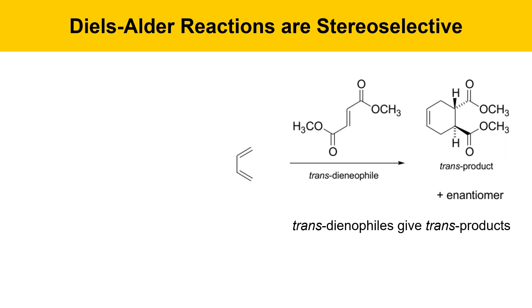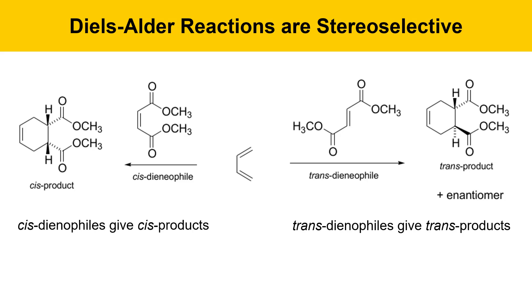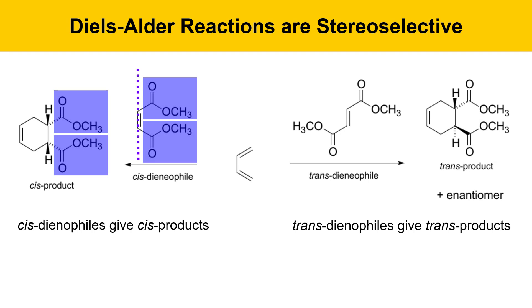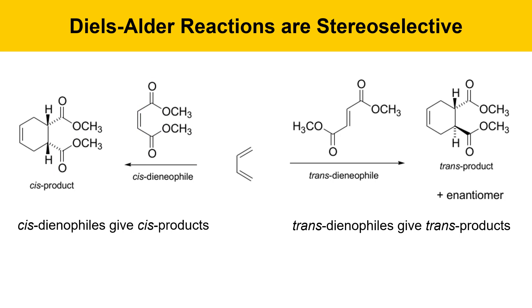In Diels-Alder reactions, cis dienophiles give cis products. In a cis dienophile, the two ester groups are on the same side of an imaginary line running down the center of the double bond, and in the cis product the two esters point in the same direction. You have to be careful not to confuse cis and trans with S-cis and S-trans — they are separate concepts. The S stands for single bond, so S-cis and S-trans refer to conformations about a single bond, while cis and trans refer to the arrangement of groups on a double bond or ring.